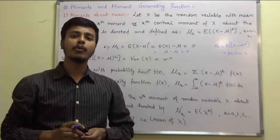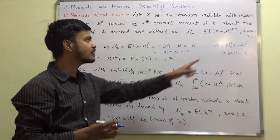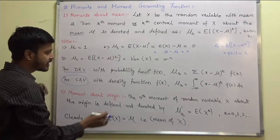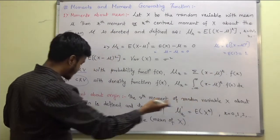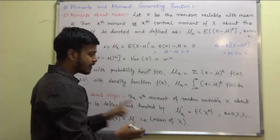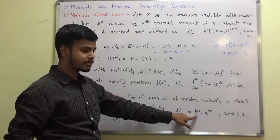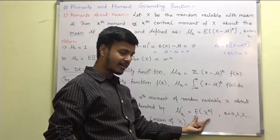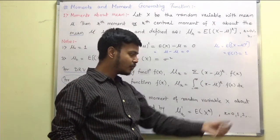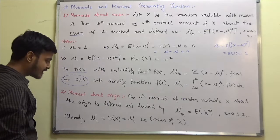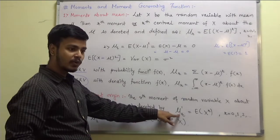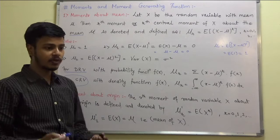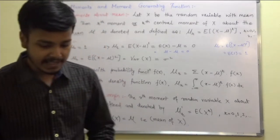If you know the moment about the mean, you can easily find the moment about the origin — you just set mu equal to 0. The rth moment of a random variable x about the origin is denoted mu_r dash and equals expectation of x^r. When r equals 1, this is simply the expectation of x, which is the mean of x.